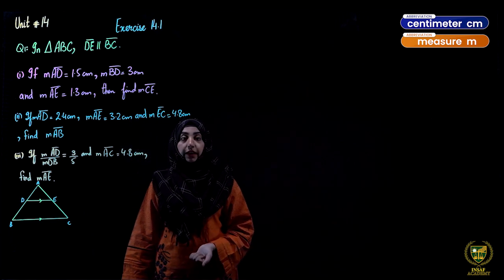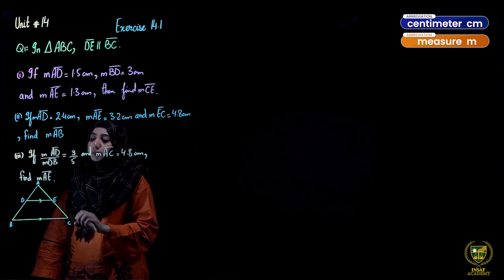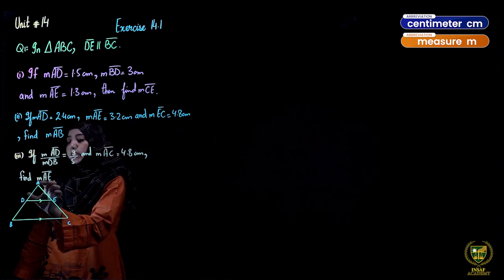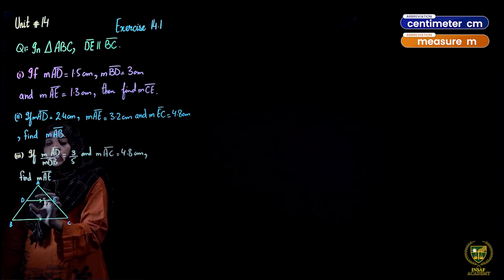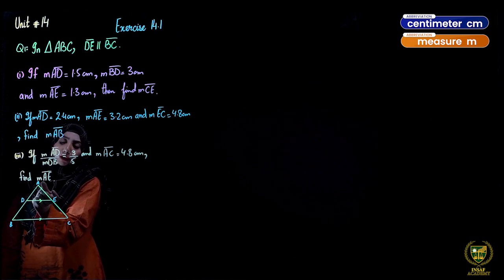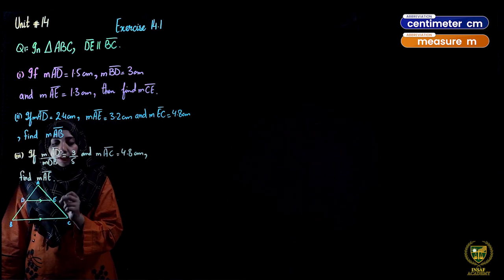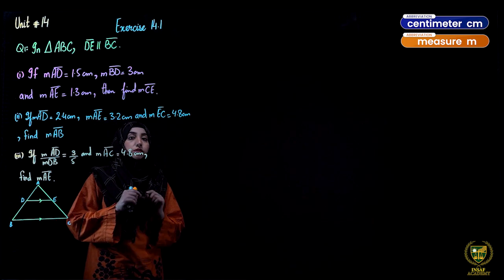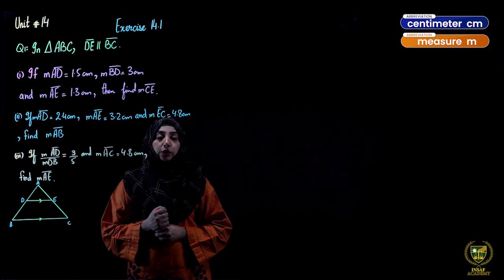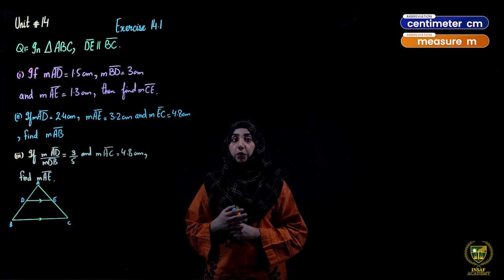We will apply that theorem here and find the remaining sides. In the first part, AD is given as 1.5 centimeters, BD is 3 centimeters, and AE is 1.3 centimeters. We have to find CE. We will first write all the given information, then use the theorem statement to find the unknown side.